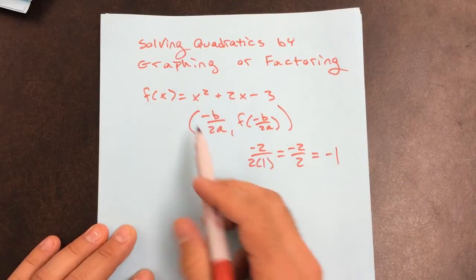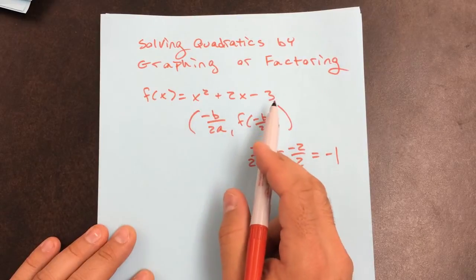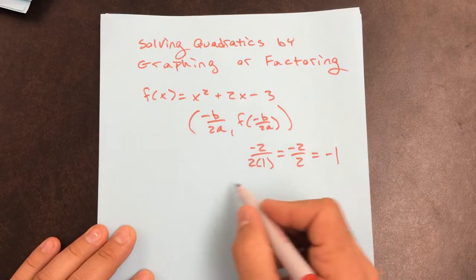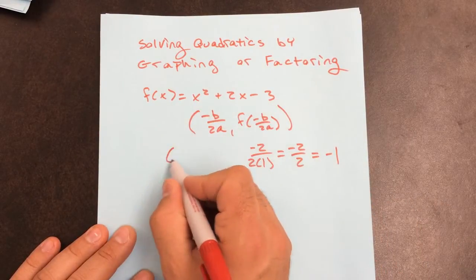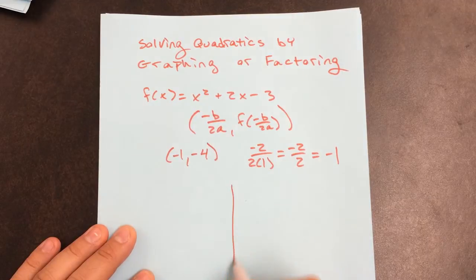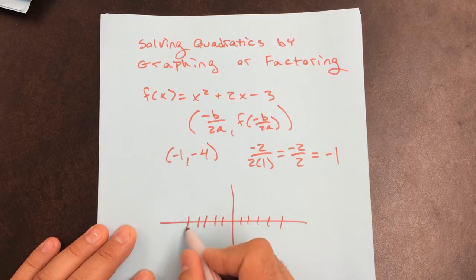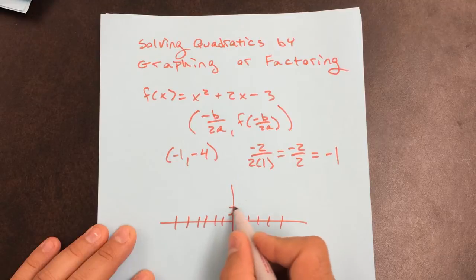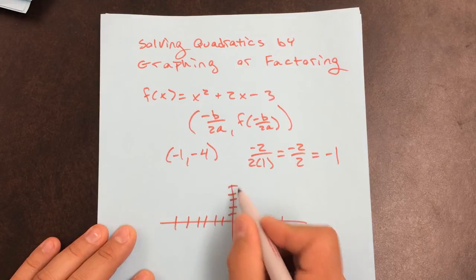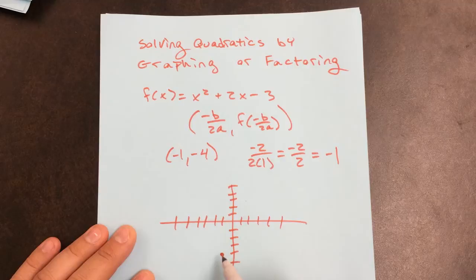Now I'm going to plug that back into the equation. When I plug it back in, it gives me negative 4. So the vertex is negative 1, negative 4. I'm just going to put that on a graph as my vertex.